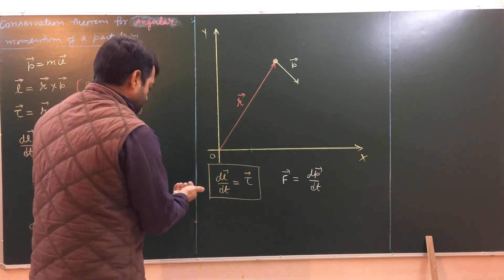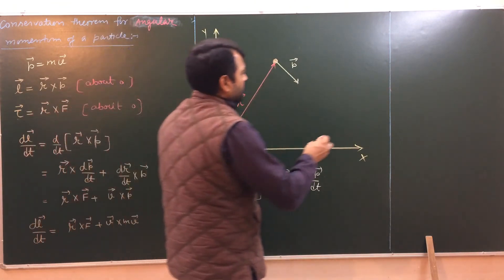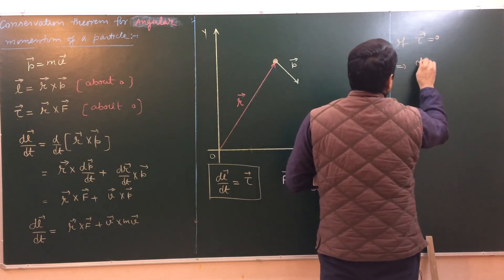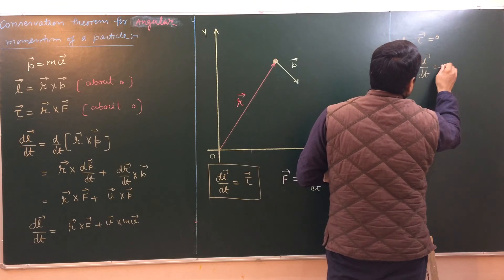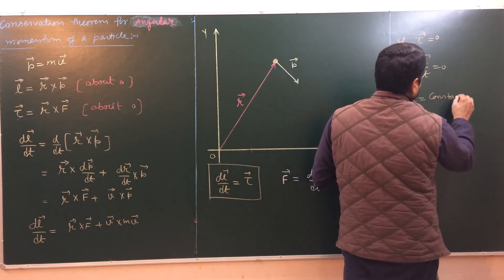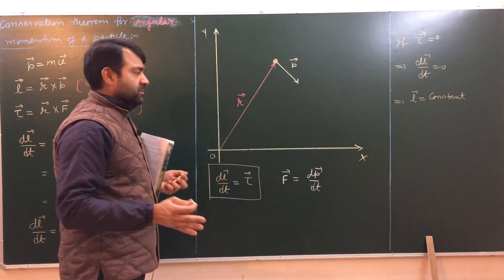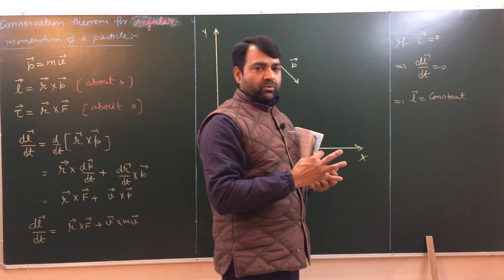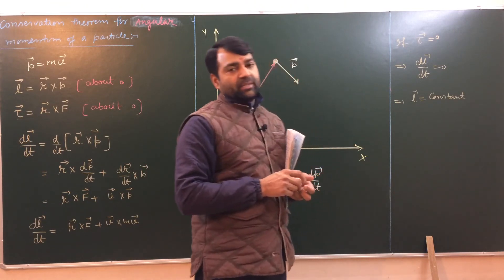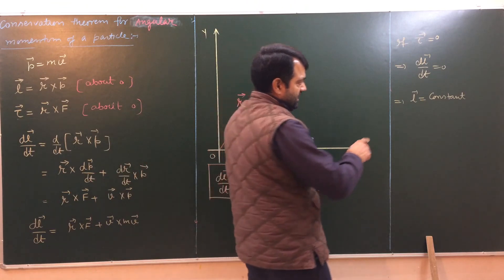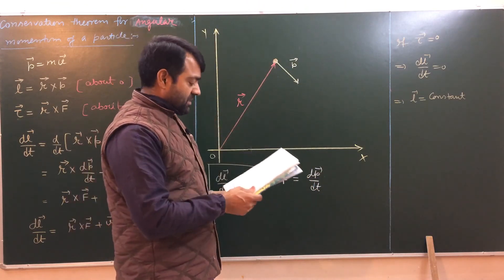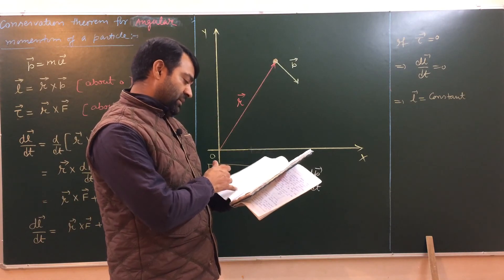Now, again, if tau equals 0, then we can say dL by dt equals 0 or L is constant. If there is no torque on the particle or the sum of various torques acting on the particle, the vector sum of all the torques acting on the particle is zero, then its angular momentum is going to be constant. Again, there is an arrow over this symbol. It means its magnitude as well as direction is not going to change. So this was our law of conservation equation of angular momentum for a particle.